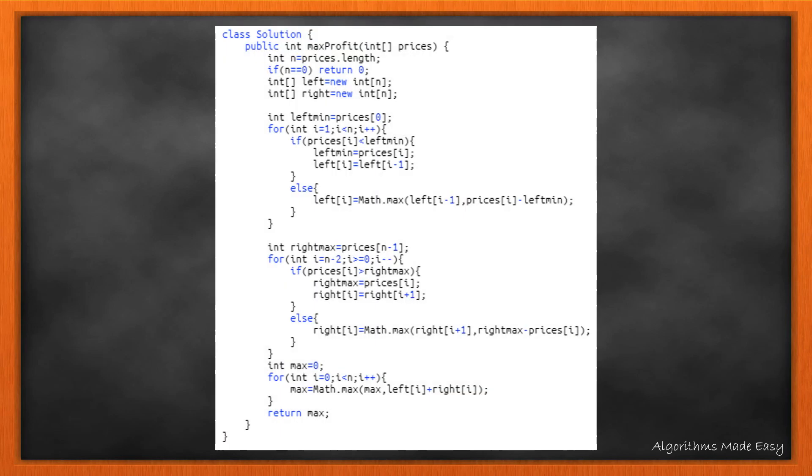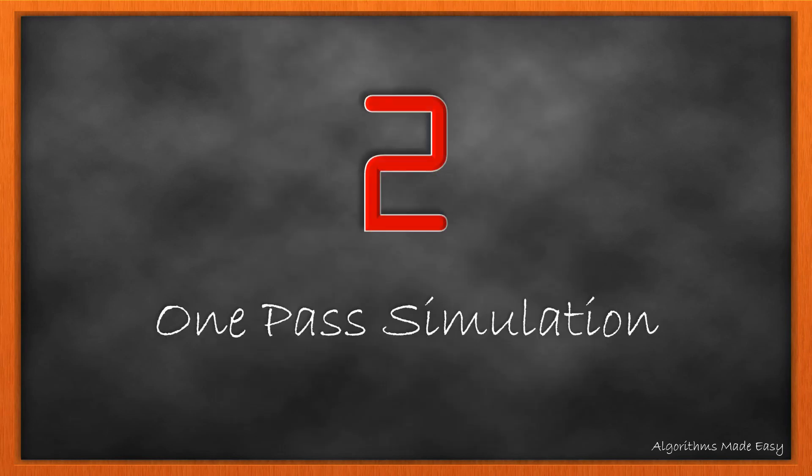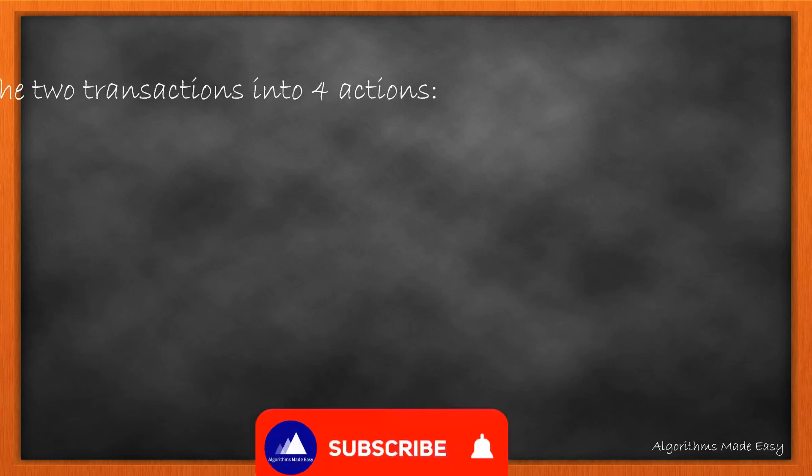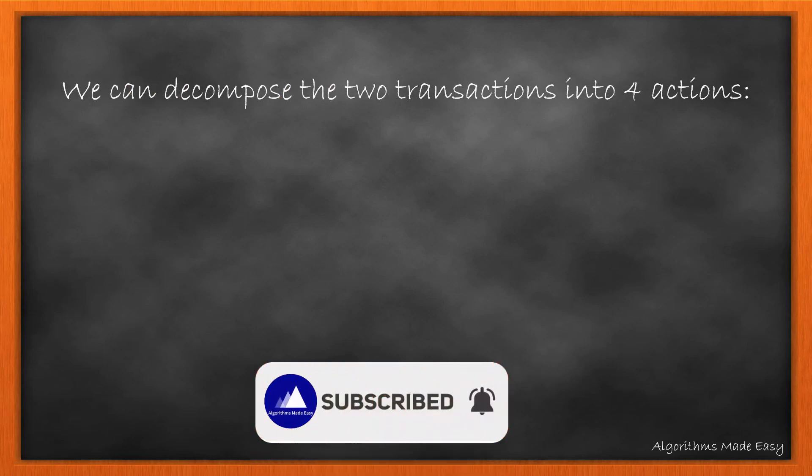Now let's see a more optimized one pass solution. It uses no extra space but is a bit tricky. We can decompose the two transactions into four actions.